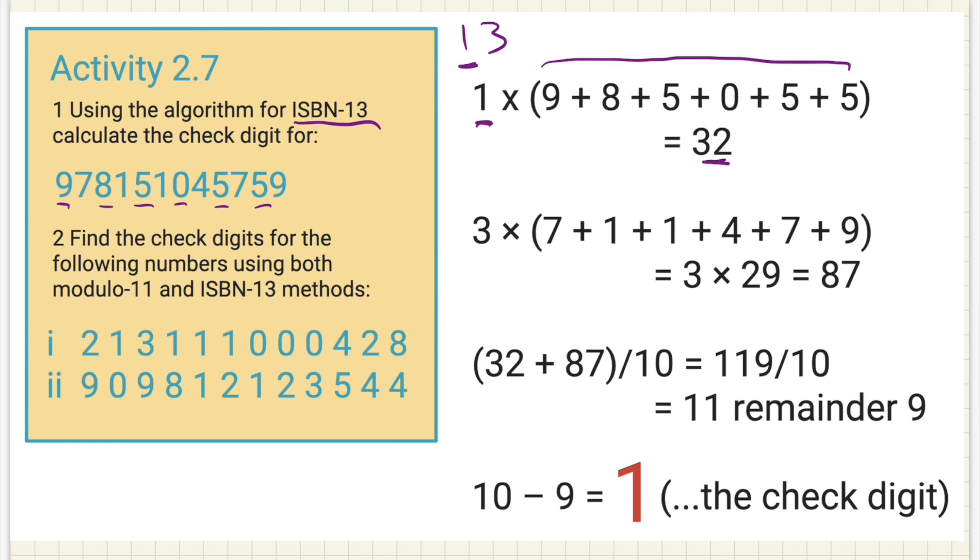And then what it's going to do, it's going to take all the even numbers, so 7, 1, 1, 4, 7, and 9. It's going to multiply these by three. With part one it doesn't necessarily need to multiply them by one, but I'll just put that in just to make it a little bit more obvious for you. So we've got one and three, i.e. 13. So we add all the numbers together, we times it by three, and we get three times 29, which is 87.